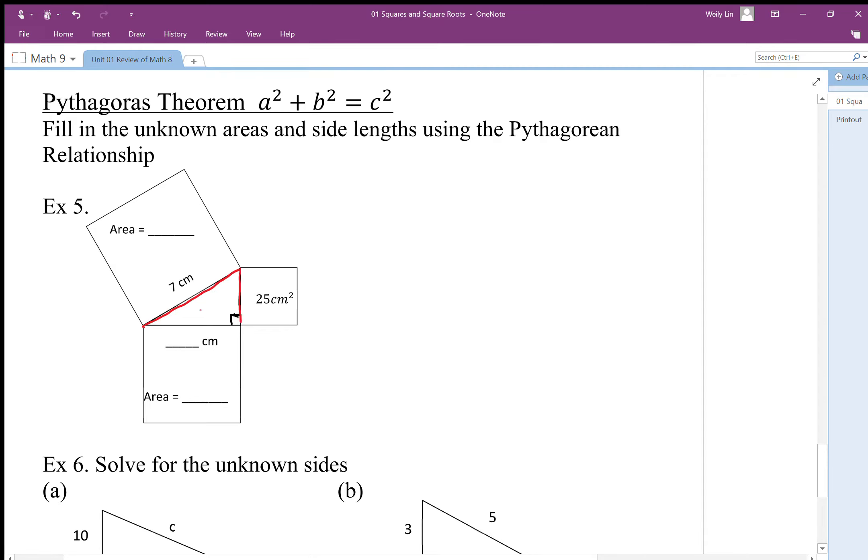It's got a hypotenuse of seven. One side has an area of 25 centimeters squared and we don't know the area of the other side. So the area relationship between the three parts. This square area here, and again not to do with the side lengths but to do with the areas. This square area here plus this square area here is going to add up to the biggest square area of the hypotenuse.